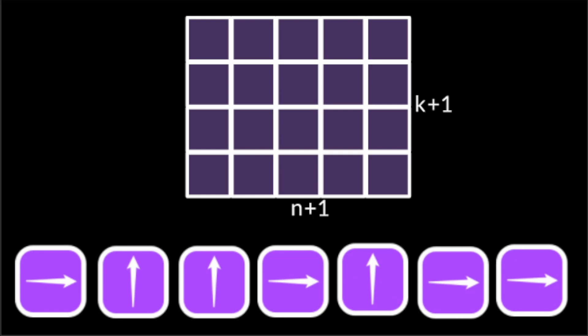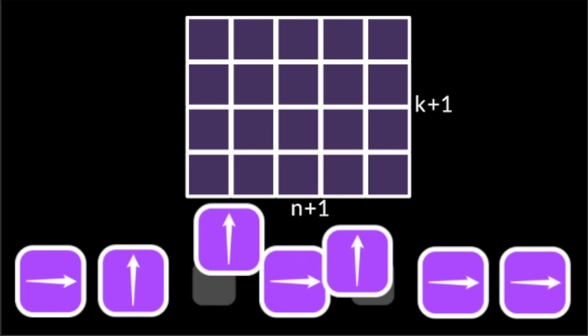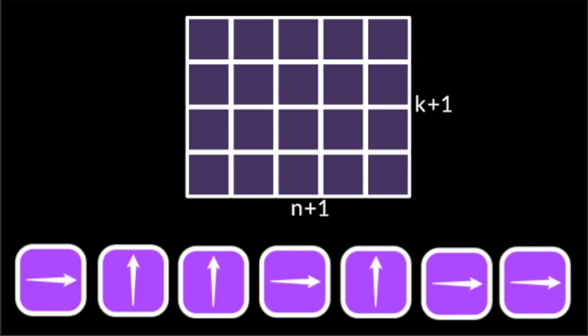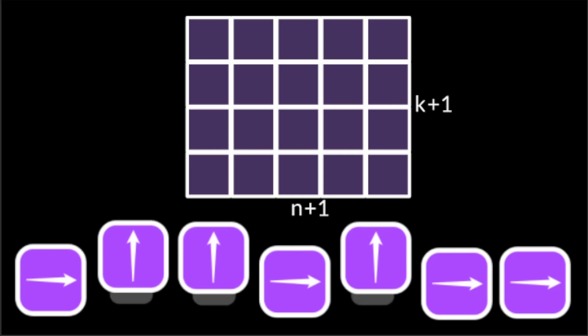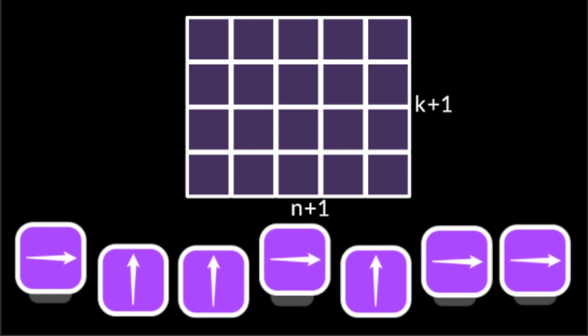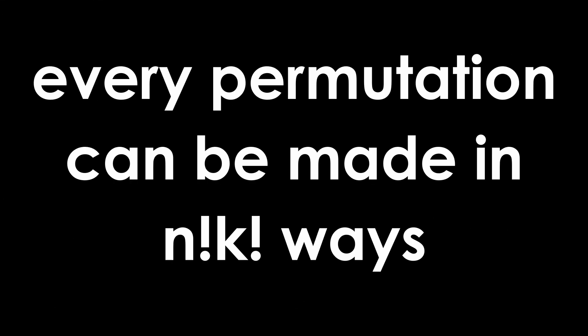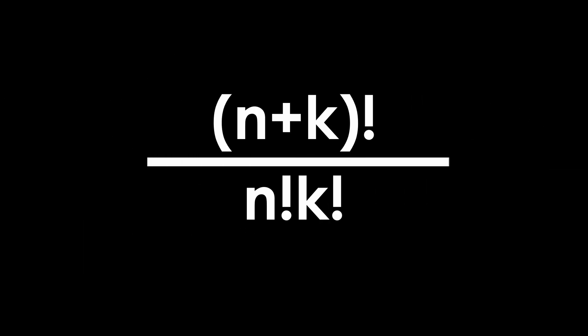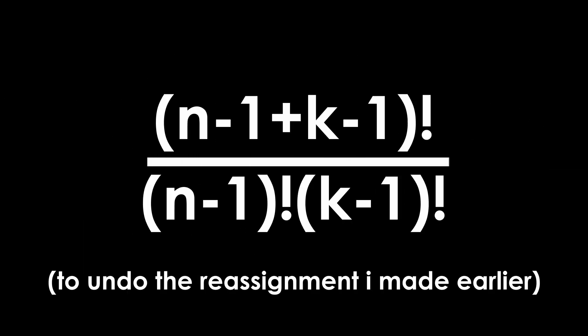No, this is not the answer to our problem, since many arrangements of these instructions are exactly the same — just with the order of the same instructions swapped, which does not change it at all. Therefore, we need to figure out how many different ways there are to make any one permutation, and divide n plus k factorial by that number. You can rearrange every up instruction in k factorial ways, and every right instruction in n factorial ways, so every position can be made in n factorial times k factorial ways. We need to subtract 1 from n and k, so the final formula is (n-1 + k-1)! divided by (n-1)! times (k-1)!, or we can simplify it further.